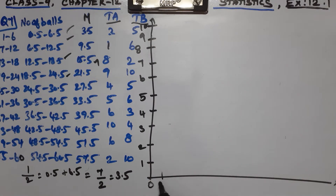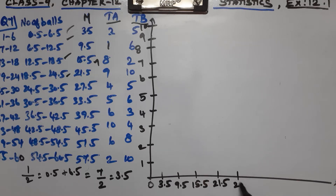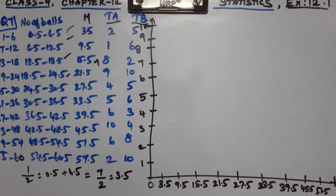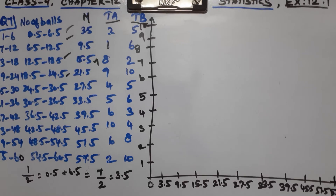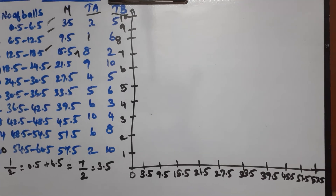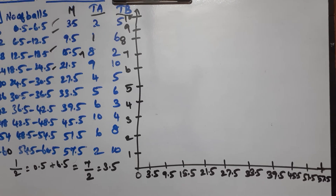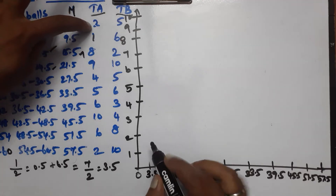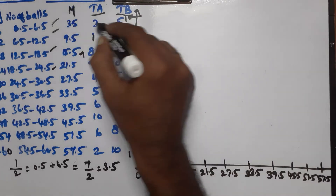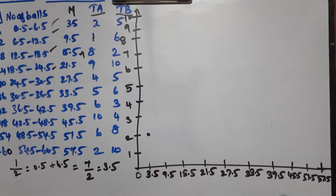Now we apply the scores. Team A is plotted in black, Team B in blue. For Team A: 3.5 → 2, 9.5 → 1, 15.5 → 8, 21.5 → 9, 27.5 → 4, 33.5 → 5, 39.5 → 6, 45.5 → 10, 51.5 → 6, 57.5 → 2. This gives the frequency polygon for Team A.